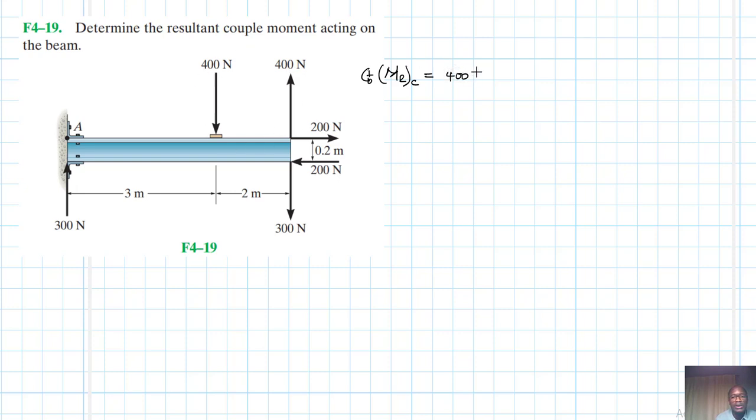so this is 400 times the lever distance 2. Then this one is clockwise, so it's minus 200 by the lever distance 0.2, and then this one is